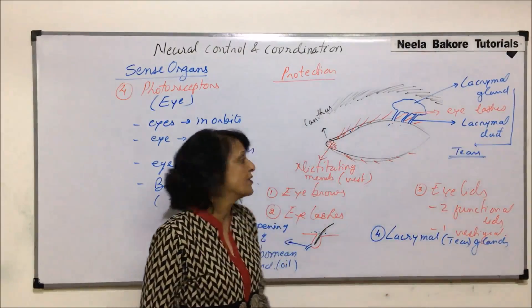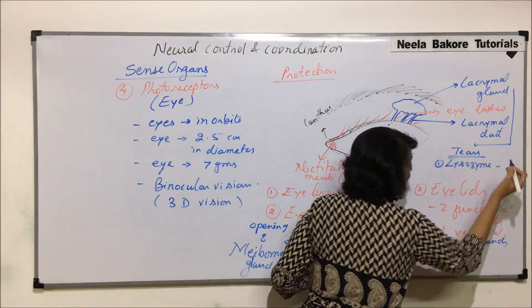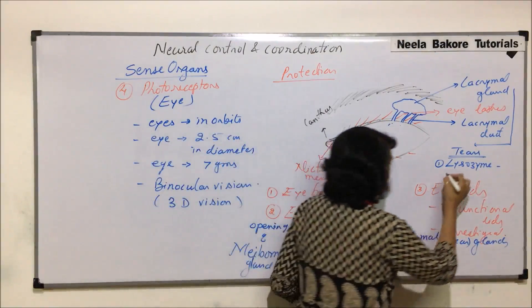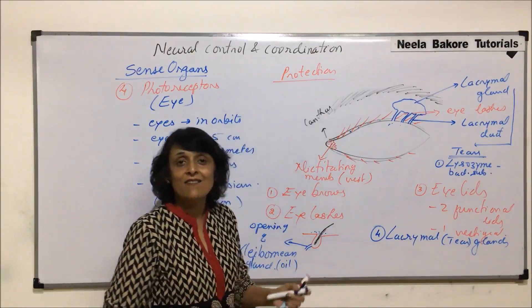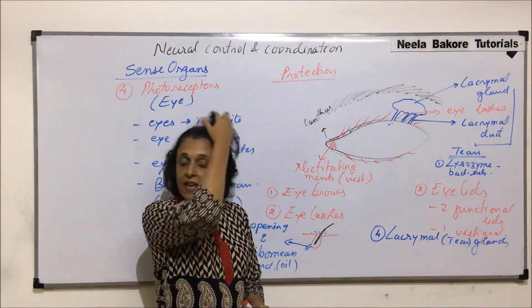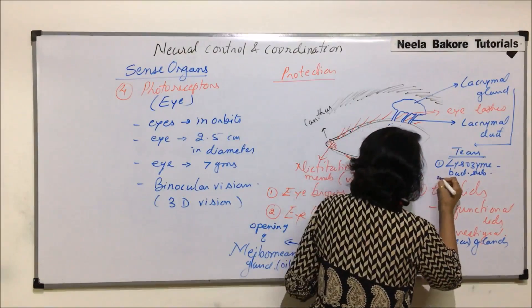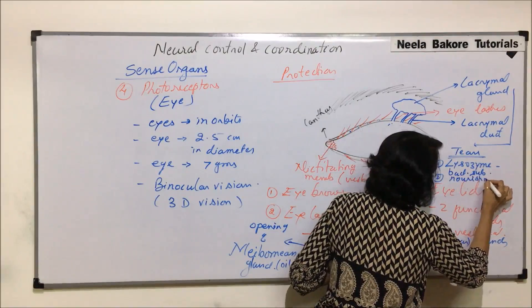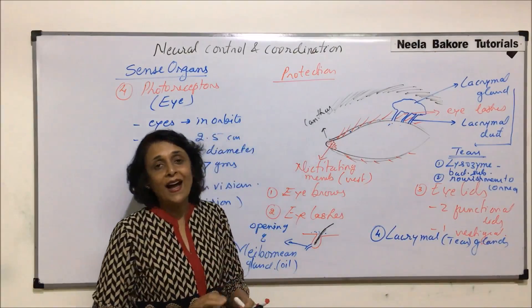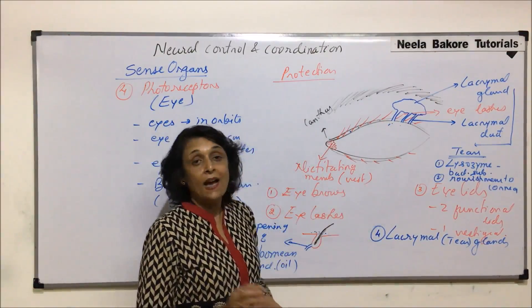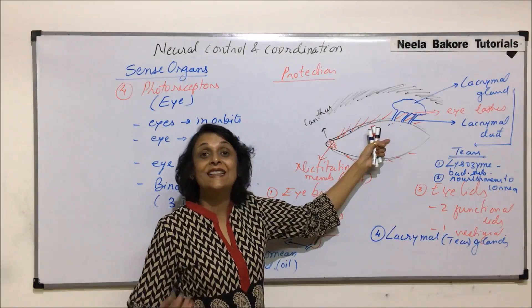What are the functions of tears? Number one, tears contain lysozyme, which is a bactericidal substance. It protects our eyes by killing bacteria that may come in contact with the eye. Number two, tears provide nourishment to the cornea. When we study the detailed structure of the eye, we will understand exactly where the cornea is located.